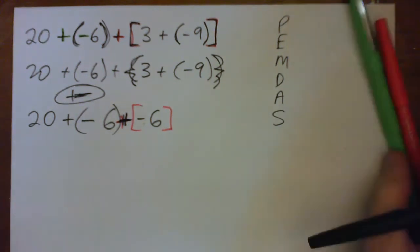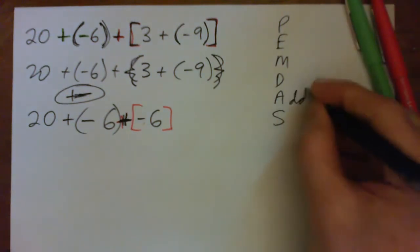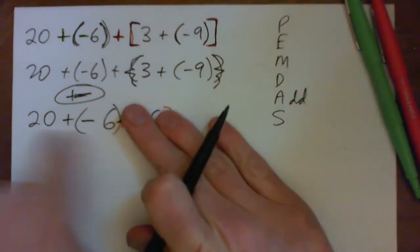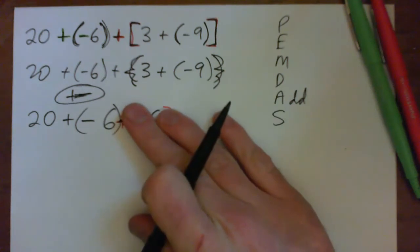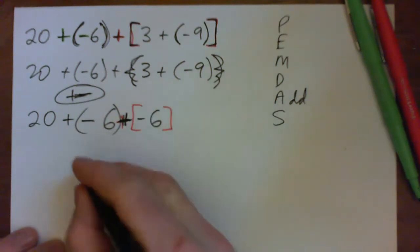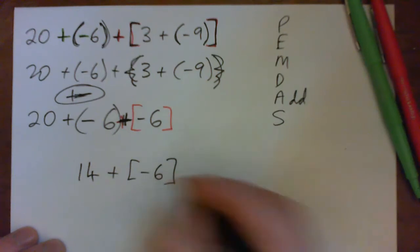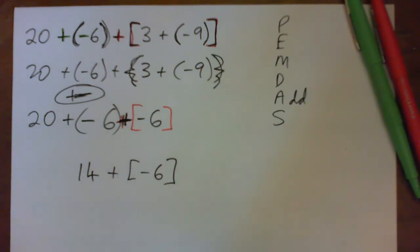You can go from left to right and add. That's what we need to do following PEMDAS. So we can just do 20 plus negative 6 first. So 20 good guys and 6 bad guys, or 20 subtract 6 is just 14. So we've got 14 plus our negative 6 there. 14 plus negative 6 is just 14 minus 6, which is just 8.